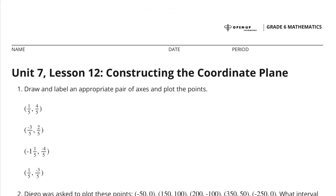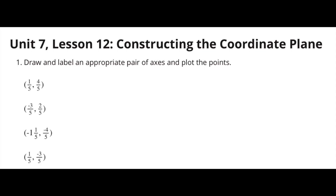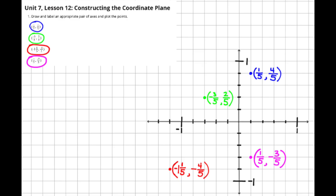Unit 7, Lesson 12: Constructing the Coordinate Plane. Number one: draw and label an appropriate pair of axes and plot the points. I designed both the horizontal axis and the vertical axis to be in increments of one-fifth, since each of the data points were in fifths or no larger than the absolute value of one and one-fifth. It was easy to fit all of the data points on this graph.